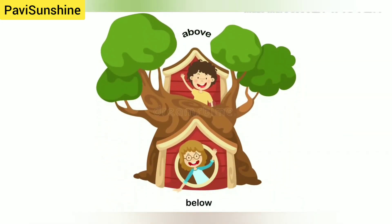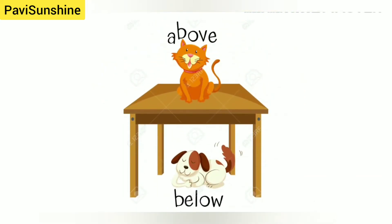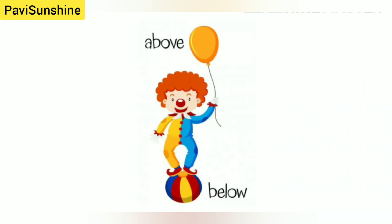Last we have above and below. Boy is above the tree and girl is below. Cat is above the table and dog is below. Ball is below to the clown and balloon is above. Say with me: above, below.